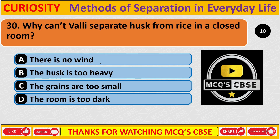Question: Why can't Wali separate husk from rice in a closed room? Correct answer is A: There is no wind.